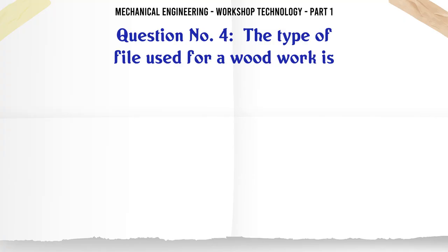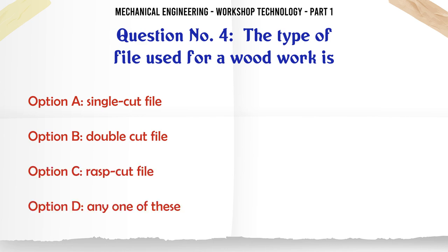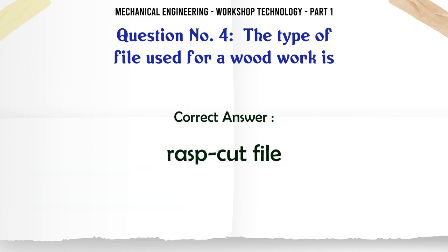The type of file used for woodwork is: A. Single cut file. B. Double cut file. C. Rasp cut file. D. Any one of these. The correct answer is: Rasp cut file.